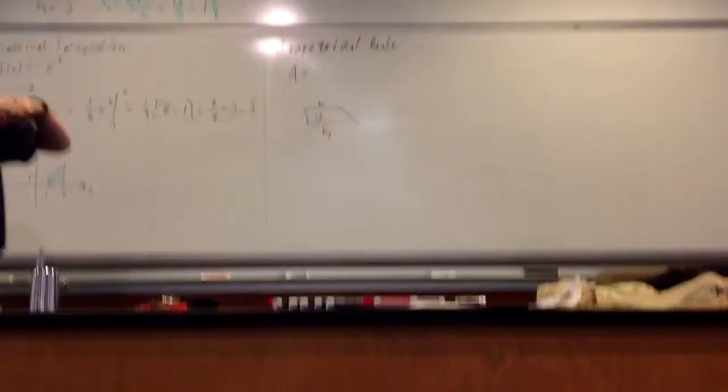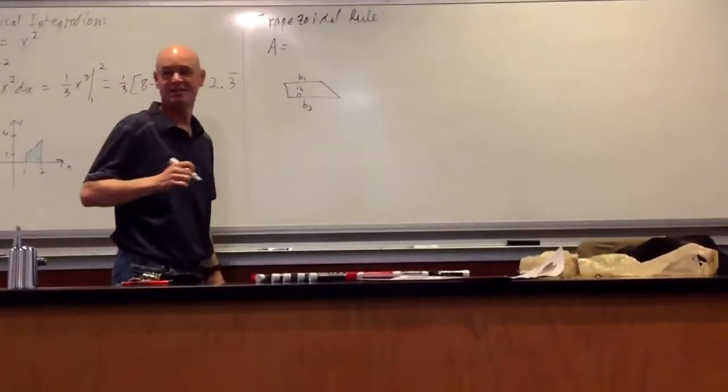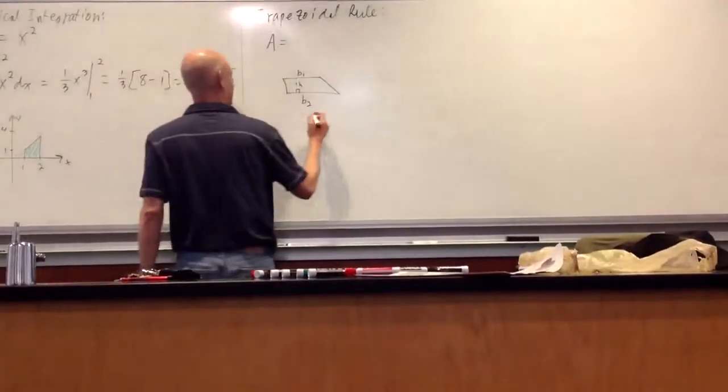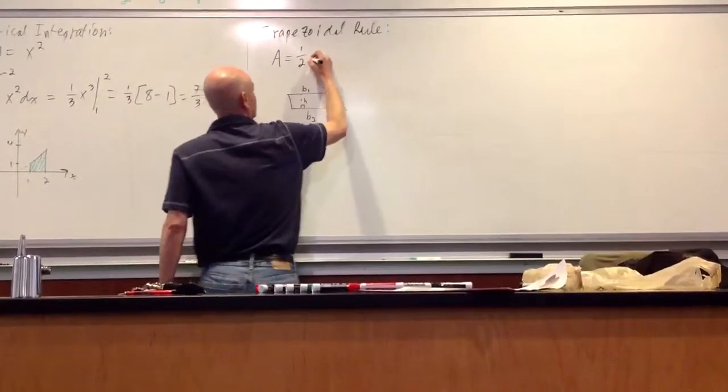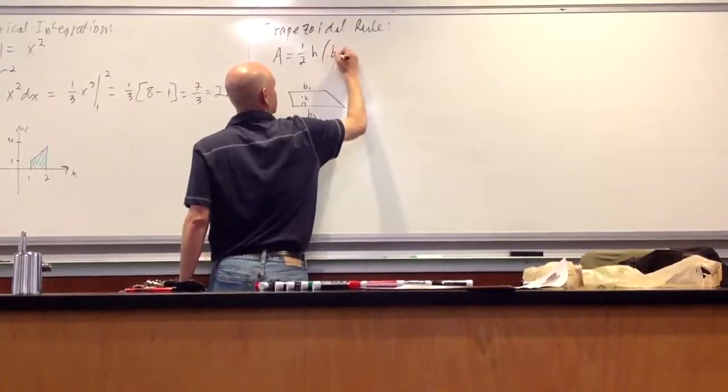What is the difference between the two parallel ones? The height. The area is equal to one half the height times the sum of the two bases.